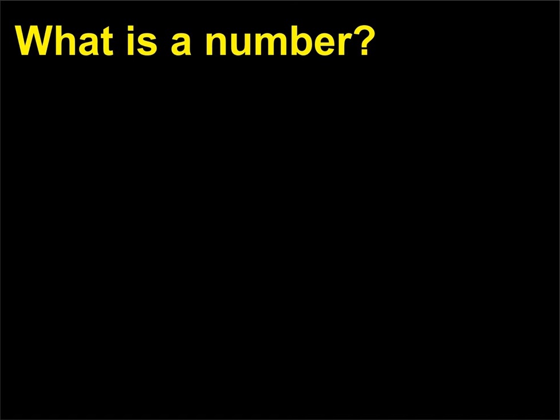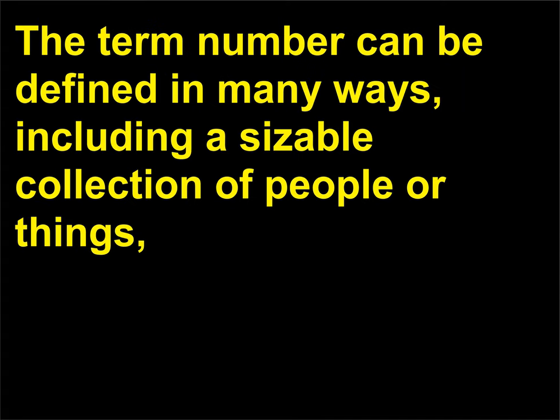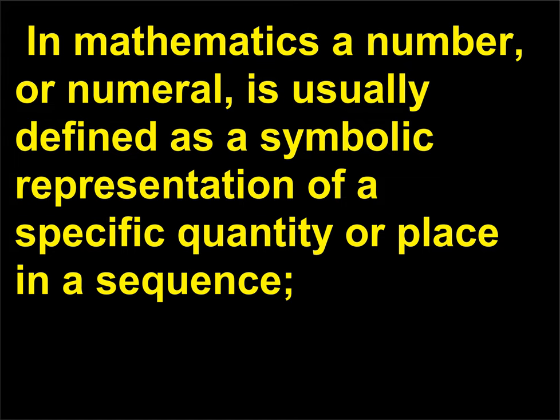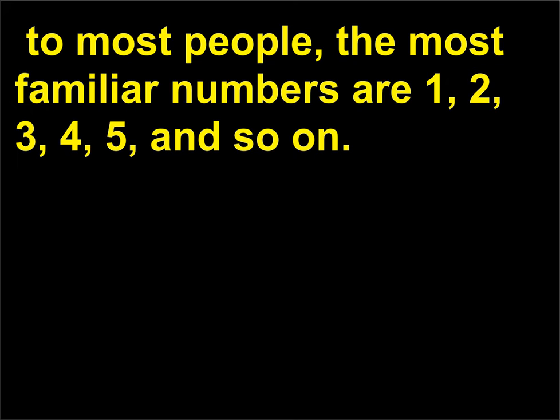What is a number? The term number can be defined in many ways, including a sizable collection of people or things, and even an indefinite quantity or collection. In mathematics, a number, or numeral, is usually defined as a symbolic representation of a specific quantity or place in a sequence. To most people, the most familiar numbers are 1, 2, 3, 4, 5, and so on.